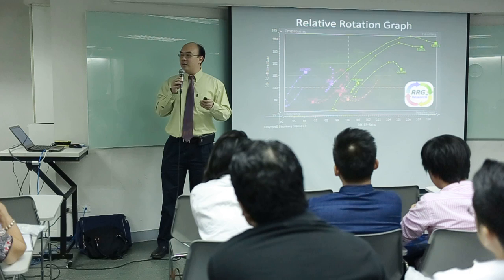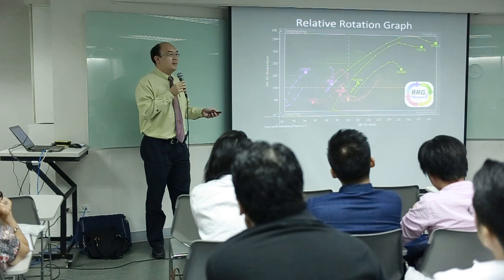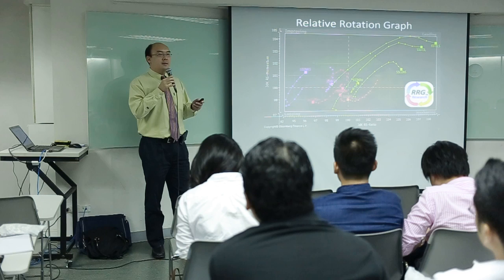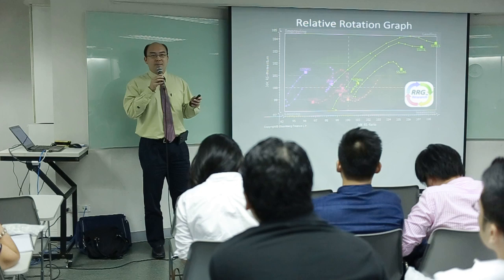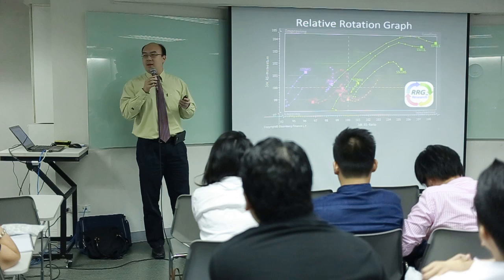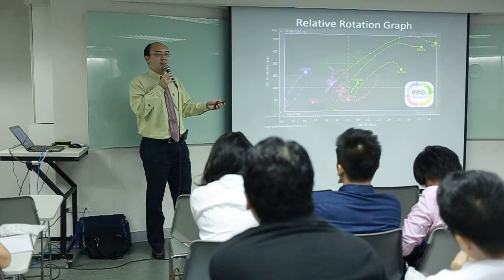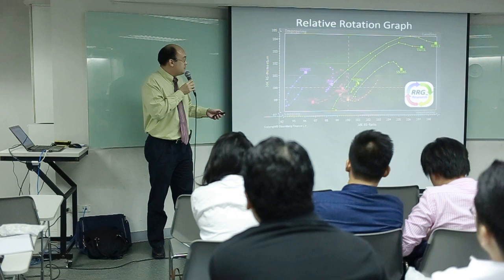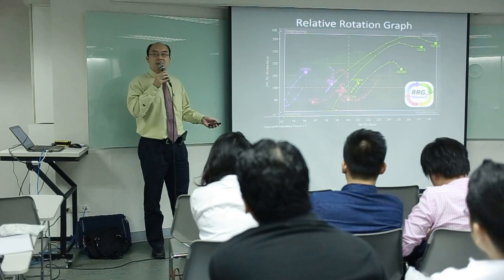I'll introduce some newer indicators that some people might not have seen before. We talked about sectoral rotation. For institutional investors, your mandate might be to be fully invested, or you cannot sell out completely of the market. We have heard about sectoral rotation, but did we ever see a graphical representation of how the sector rotates? This is the relative rotation graph available on Bloomberg.